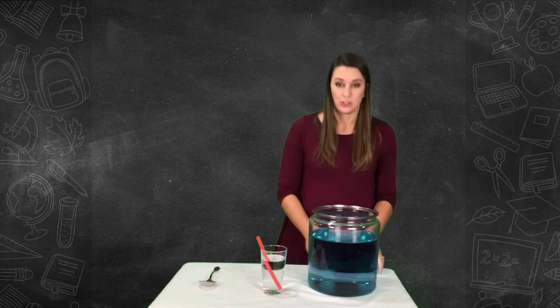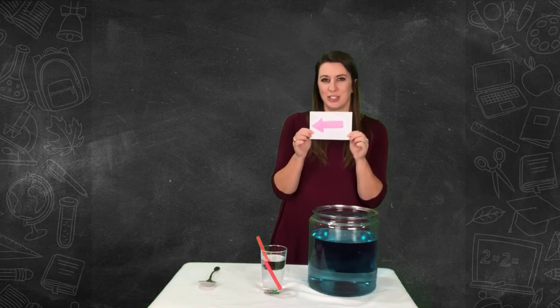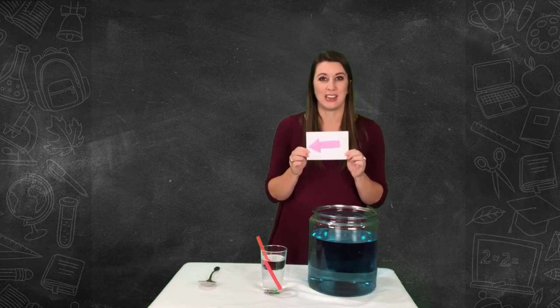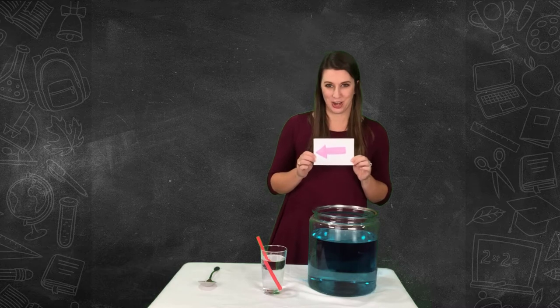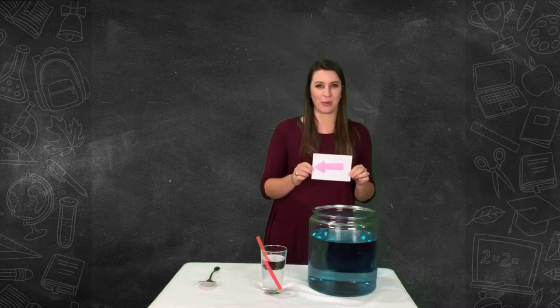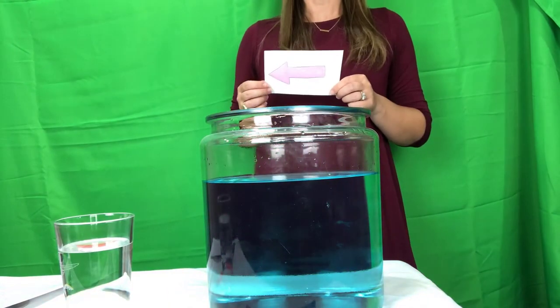Take this a step further. Fill a large clear container that's round with water. Then draw a horizontal arrow on an index card. Show it to your students and make sure the container is at their eye level and that you are standing behind it with the index card. Have them watch while you slowly lower the index card behind the container. The arrow will appear to switch directions.